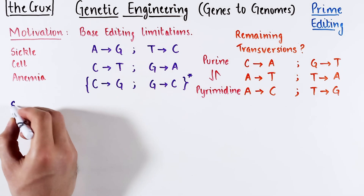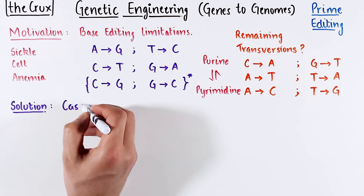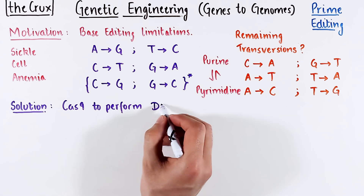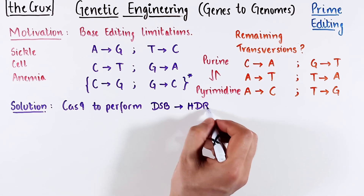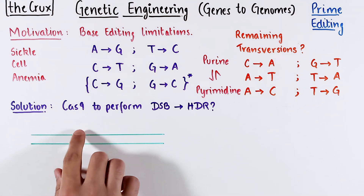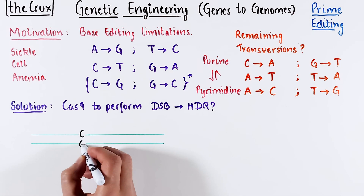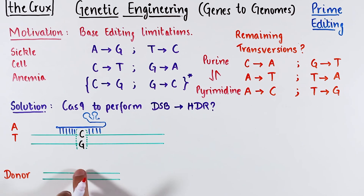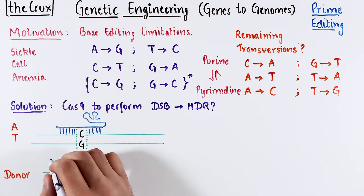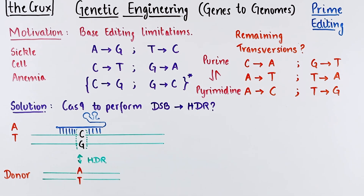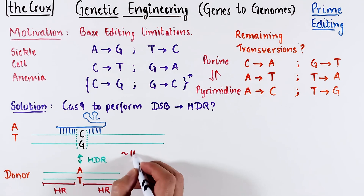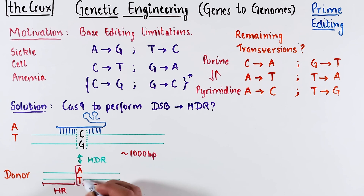A simple solution might be to use Cas9 to make a cut and repair using a donor. You make a cut near the exact base pair you want to change — say you want to change CG to AT — then you come in with a donor containing the AT base pair alongside homology arms, and HDR will swap the CG to AT, successfully interchanging purines and pyrimidines. However, the homology regions are nearly 1000 bases in total, and the alteration is only in a single base pair.